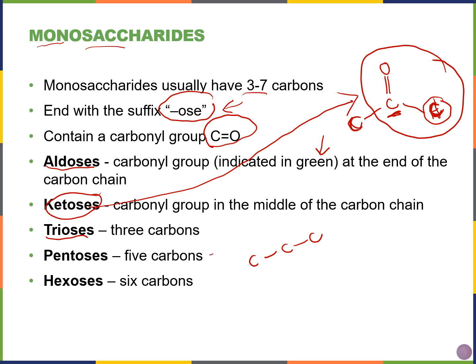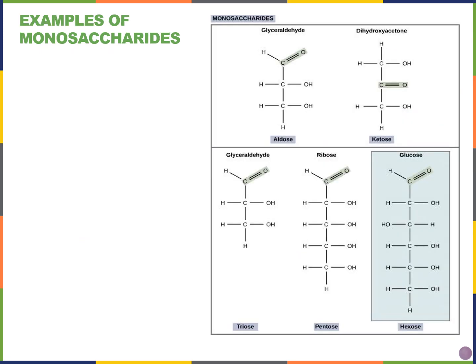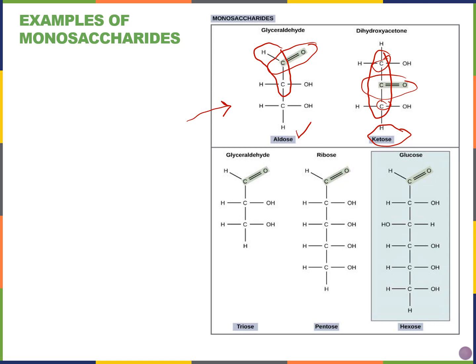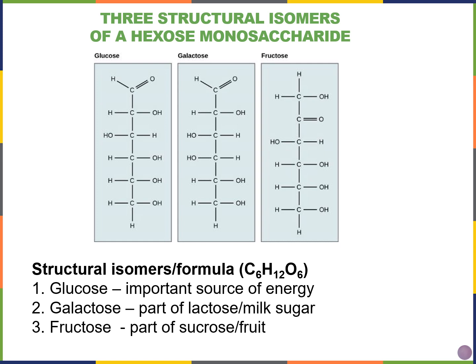We also classify monosaccharides by carbon chain length. If you have three carbons, we have trioses; five carbons gives pentoses; and six carbons gives hexoses. So we can classify monosaccharides both by whether they're an aldose or a ketose, and by their carbon chain length: triose, pentose, or hexose.